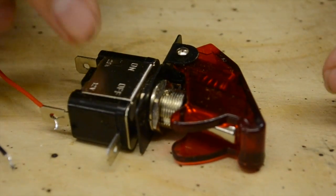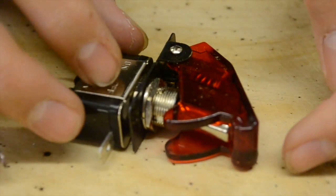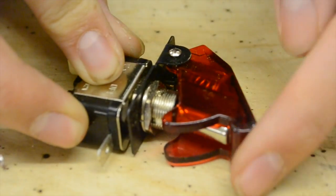Now this is the arm switch. I'm using a missile-style toggle switch, which is kind of appropriate, but it's called that because of this cover here.